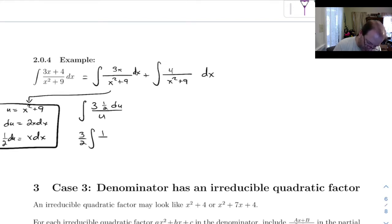And so that's going to give me 3 halves ln of u, but I'm going to go ahead and replace the u with x squared plus 9, like that. Notice I left off the absolute values on this one because x squared plus 9 has to be positive. So it's not wrong to keep them on there, but they're not really needed.